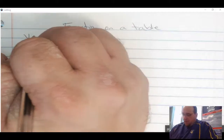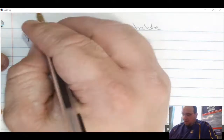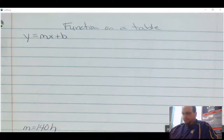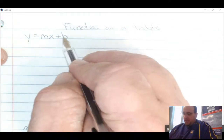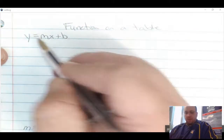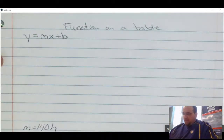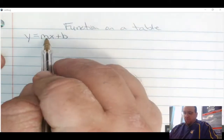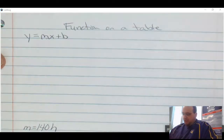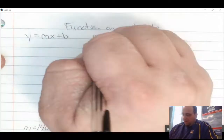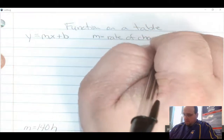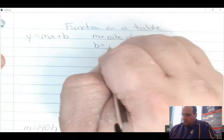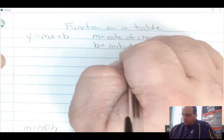Going back, we wrote an equation in y equals mx plus b form — this is slope-intercept form. M is your slope, x is your variable or x value, b is your y-intercept, and y is your y-value. M is also a rate of change, and b is your initial value, or where you start.